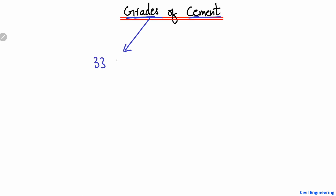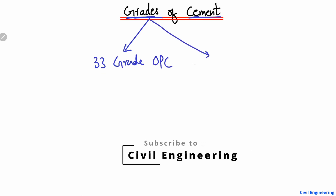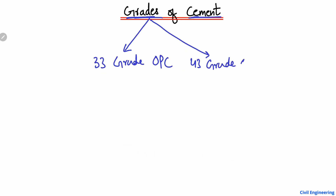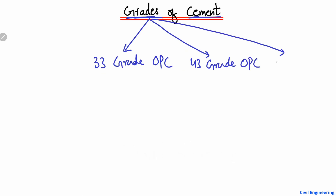There are three grades of cement: the first is 33 grade Ordinary Portland Cement, the second is 43 grade Ordinary Portland Cement, and the third is 53 grade Ordinary Portland Cement. Each grade of cement has its own purpose.